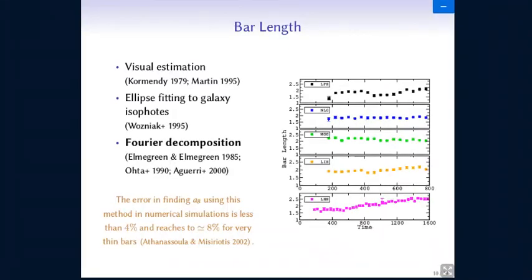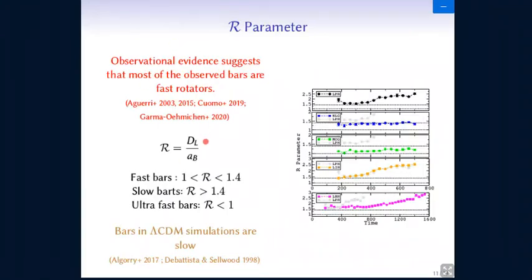So this is going to be used to calculate the R parameter. We need a bar length also and we use the Fourier decomposition method to calculate the bar length. And this has been shown to be in good agreement for the values we find for the bar length with this method in numerical simulations. And now we find the R parameter. And as you saw earlier, we have the same results here. The modified gravity models stay in the fast bar regime. However, all the three dark matter models are all slow bars.